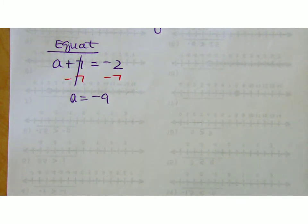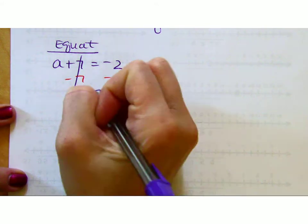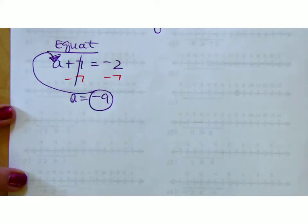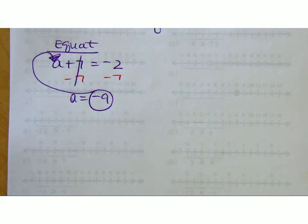A has to be negative 9. It can't be any other number than negative 9, meaning when I go up here and put negative 9 in for a and add 7 to it, I get negative 2. That's how it checks.